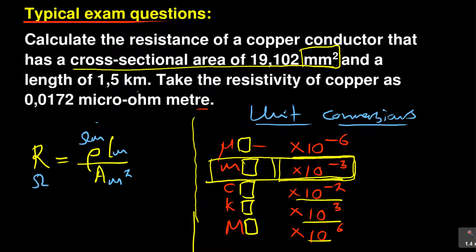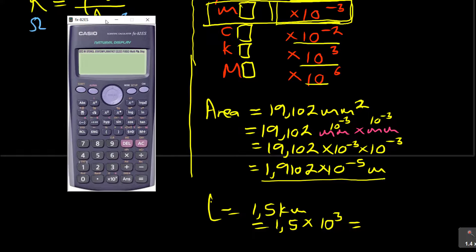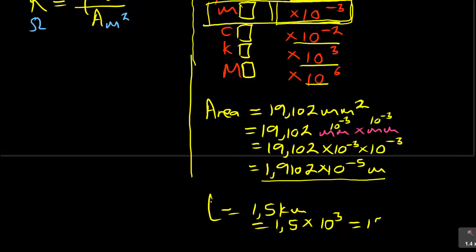The second conversion: length is given as 1.5 kilometers. Kilo means multiply by 10 to the power of 3. So length equals 1.5 times 10 to the power of 3, which gives 1,500 meters. Remember the unit is now in meters.